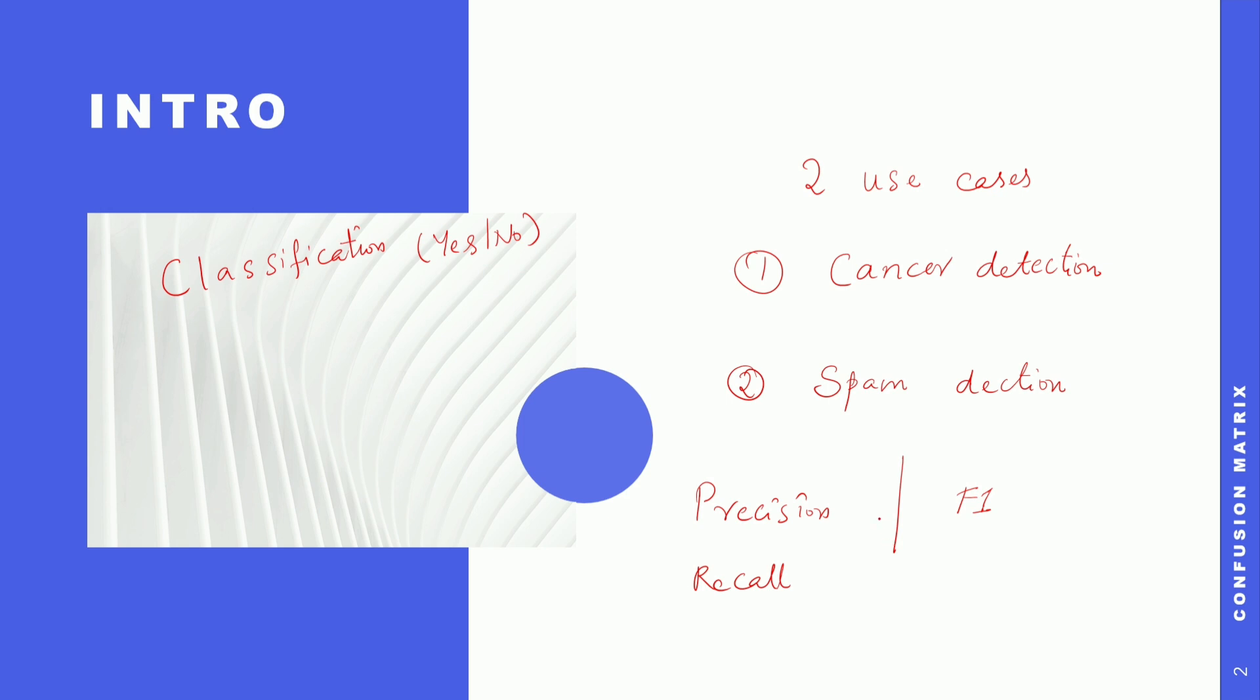If you understand this precision and recall, when these are important, then the other parts actually become easy. So now we are very clear of what is confusion matrix and what is true positive, true negative, the equations and how it comes as precision, recall, sensitivity, specificity, accuracy, F1 score, all of this.